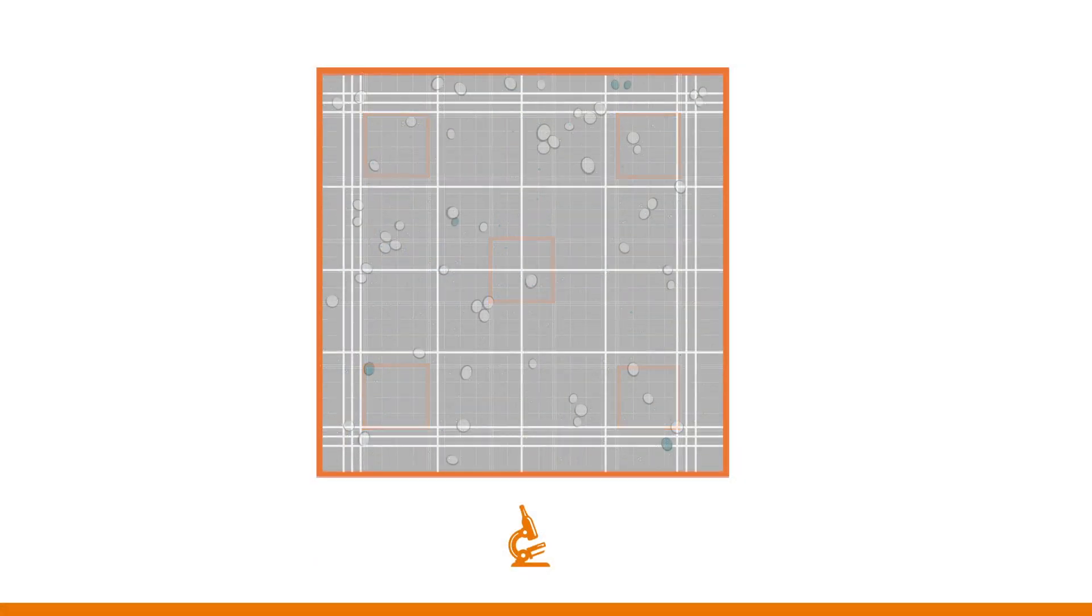These squares will appear to be a 4 by 4 grid. Count cells on 2 of the boundary lines and keep the position of these lines consistent throughout your cell count.